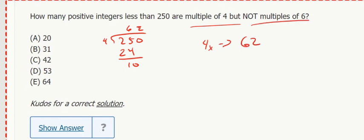But we need to take out the ones, it wants multiples of 4, but not multiples of 6. So we need to take out the multiples of 4 that also are multiples of 6. Now, that does not mean doing 250 divided by 6. We don't care about just any regular multiple of 6. We care about the multiples of 6 that are multiples of 4.